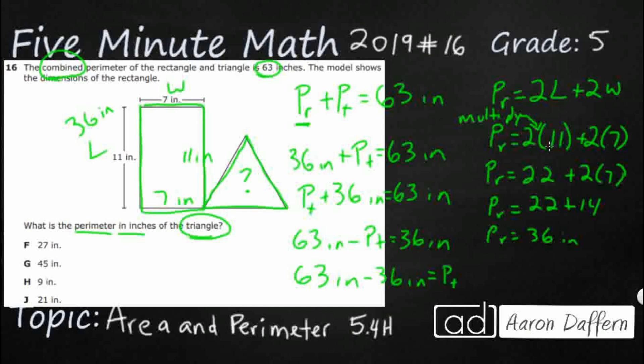All we've got to do is subtract 63 minus 36. Subtract that. That's going to be 5. Regroup. That's 7. 27 inches. Your answer is F.